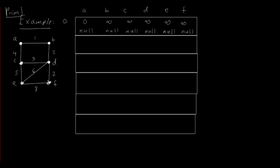We start iteration zero with all values initialized. From the queue Q, we extract the minimum, which is A. For A, we update all adjacent vertices. AB has weight 1, so we update B's cost to 1 coming from A. AC has weight 4, which is less than infinity, so we update C's cost to 4 coming from A. Everything else remains infinity null.